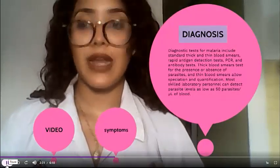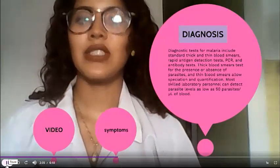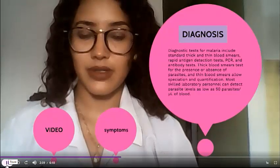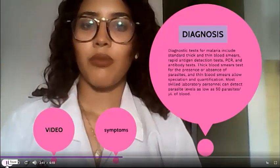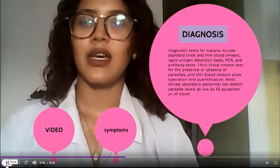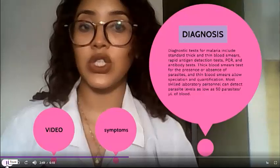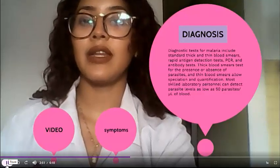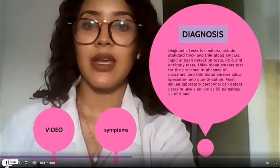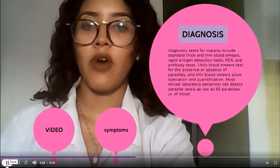Diagnostic tests for malaria include thick and thin blood smears, rapid antigen detection tests, PCR, and antibody tests. Thick blood smears test for the presence of parasites, while thin blood smears allow identification and quantification. Skilled laboratory personnel can detect parasite levels as low as 15 parasites per microliter of blood.